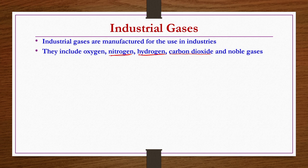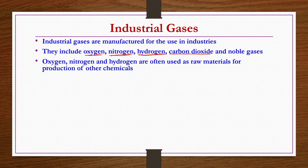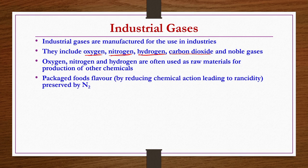Nitrogen is sometimes also used as an inert atmosphere for conducting reactions where inert atmosphere is essential. Oxygen is often used for oxidation, partial oxidation or combustion. It is also used as a medical requirement. Oxygen, nitrogen and hydrogen are often used as raw materials for production of other chemicals. N2 is also used for preserving the flavor of packed food material especially.